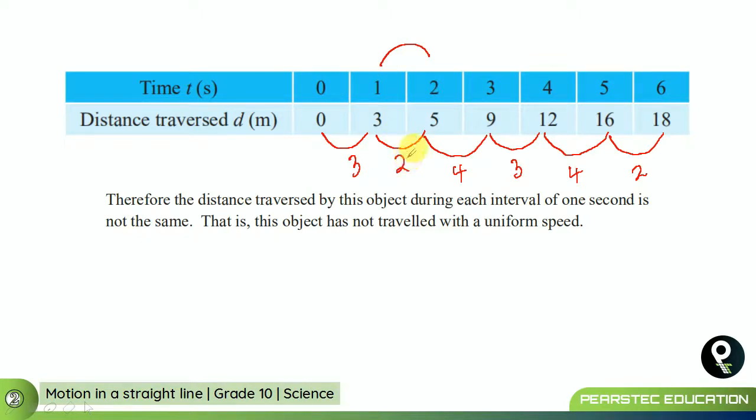From 1 to 2, it traveled 2 meters. From 2 to 3, it is traveling 4. 3 to 4, it is traveling 3. So, there is a clear change in the distance. Do you see that? Therefore, the distance traversed by this object during each interval of 1 second is not the same. This object has not traveled with uniform speed.